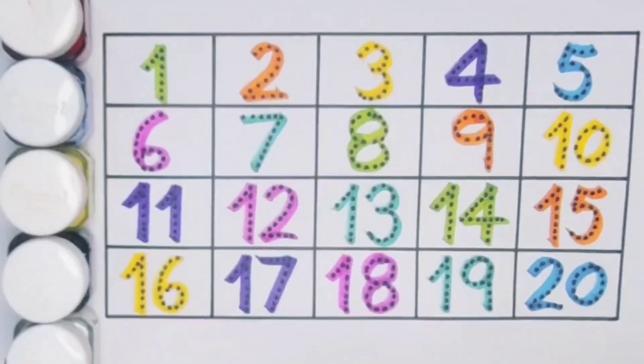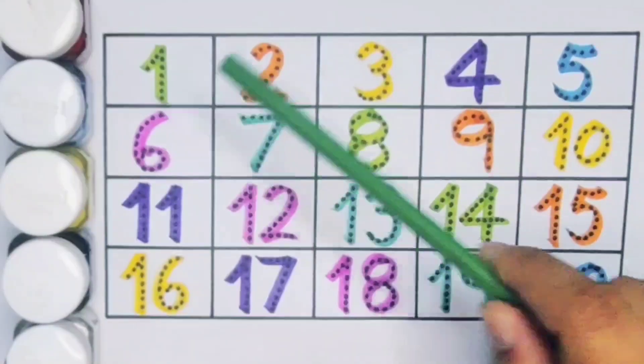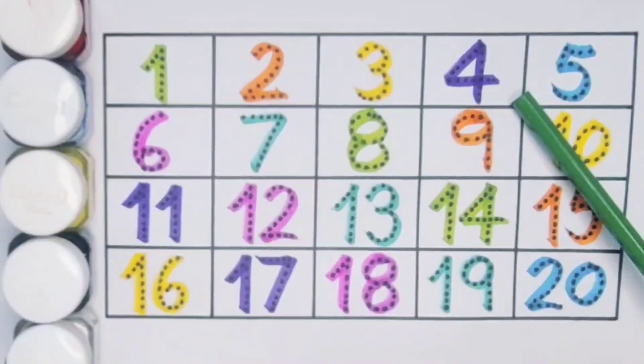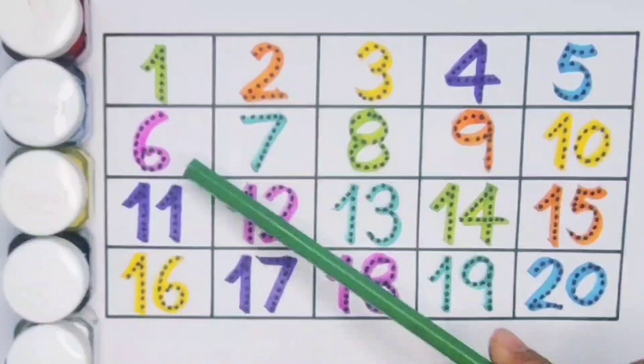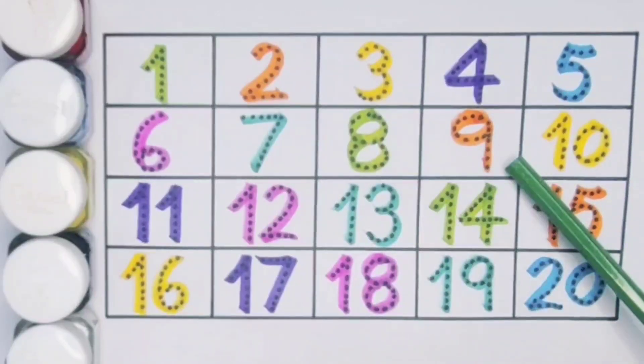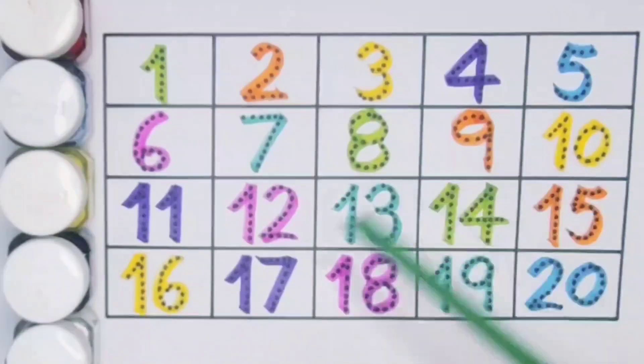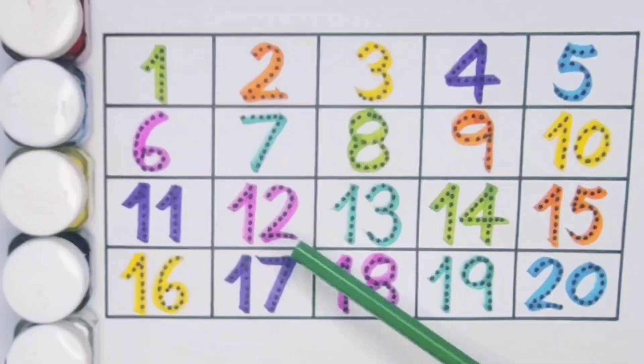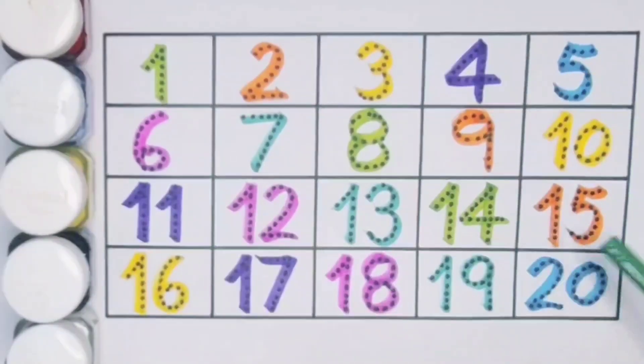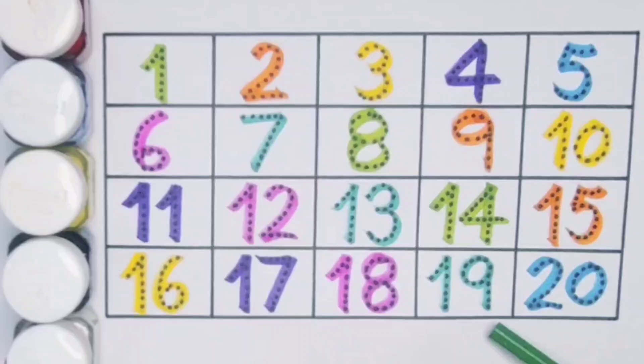What we learn? We learn one, two, three, four, five, six, seven, eight, nine, ten, eleven, twelve, thirteen, fourteen, fifteen, sixteen, seventeen, eighteen, nineteen, twenty.